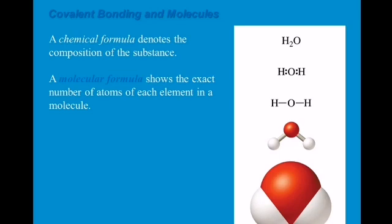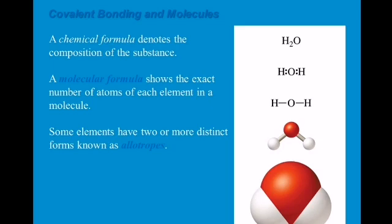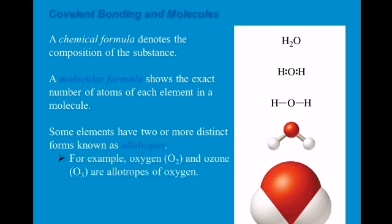Some elements have two or more distinct forms known as allotropes. For example, oxygen has two possible forms: oxygen itself with the formula O2, and ozone with the formula O3. These are called allotropes of oxygen because oxygen forms two or more distinct structures.